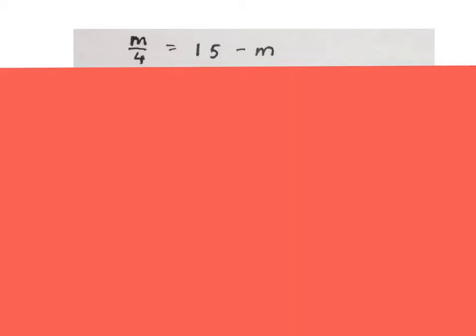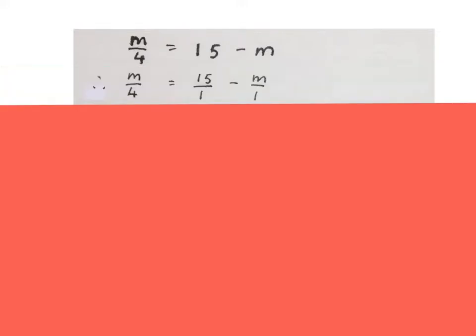When we solve equations with fractions the first thing we do is we change all these terms into fractions. So we keep the first fraction, change the 15 to a 15 over 1 and change the m to a minus m over 1. Now everything is fractions.